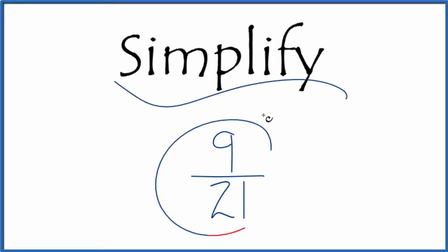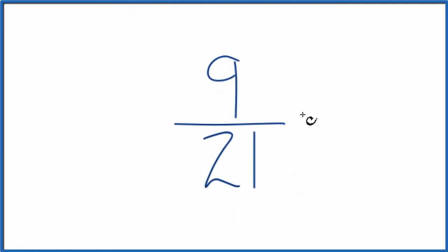Let's simplify the fraction 9 21sts. And here's how we do it. We're trying to find another fraction that's equivalent, has the same value as 9 over 21. It's just that we've simplified it to its lowest terms.